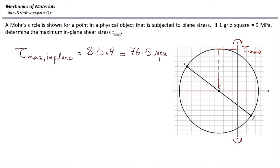Now consider the maximum absolute shear stress. The principal stresses are positive and negative — sigma_p2 on the left is negative and sigma_p1 on the right is positive. Because the principal stresses have opposite signs, the other Mohr circles would be smaller than the one shown, so the maximum absolute shear stress equals the maximum in-plane shear stress in this case.